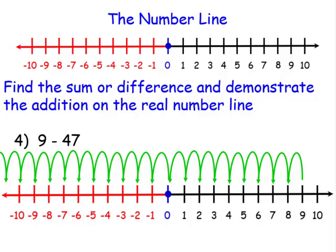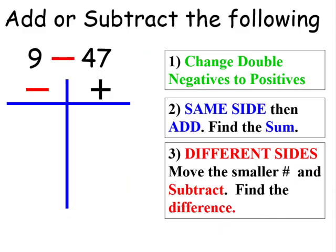And that's by using a t-chart. When we use a t-chart, the first thing we look for is to change double negatives to positives. Step 1: change double negatives to positives. Step 2: if the two numbers are on the same side of the t-chart, then we add — we find the sum. Or, if the two numbers are on different sides, we move the smaller number over and subtract — we find the difference.